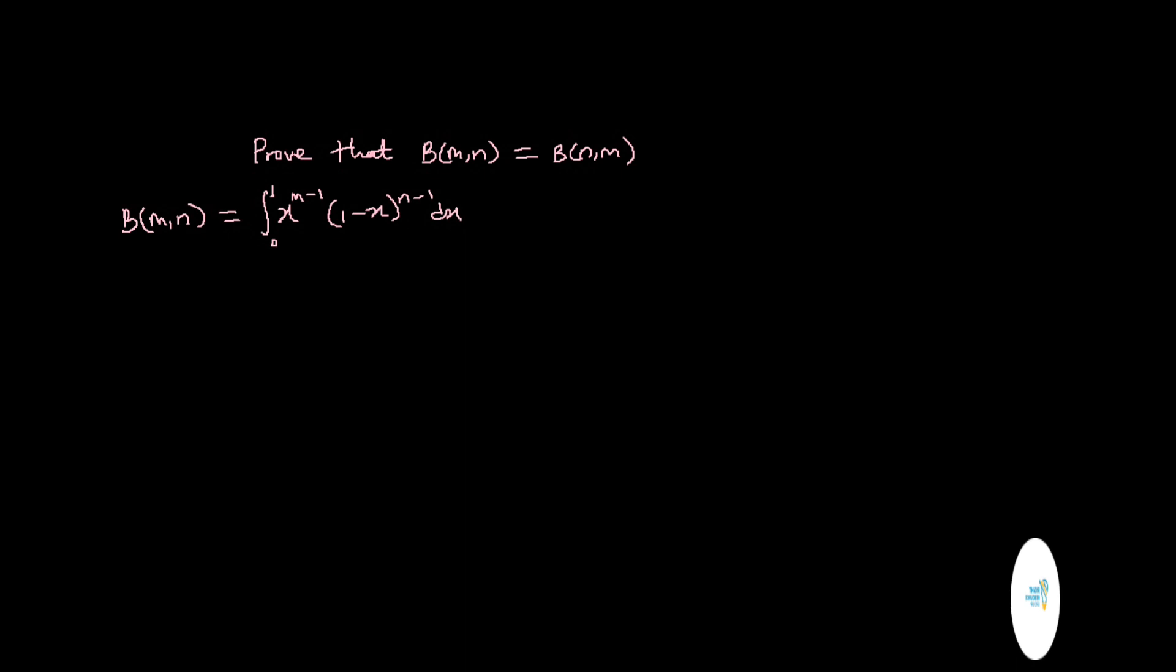Now let's look at this carefully and do our manipulation to get our answer. To prove that this is equal to this, we have to let X be equal to 1 minus Y. So anywhere you see X, you are going to put 1 minus Y.